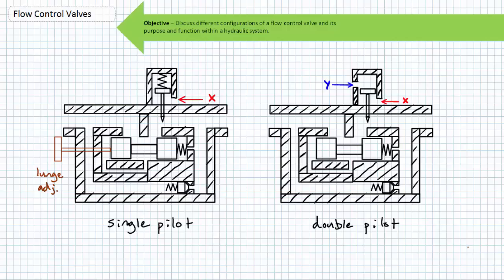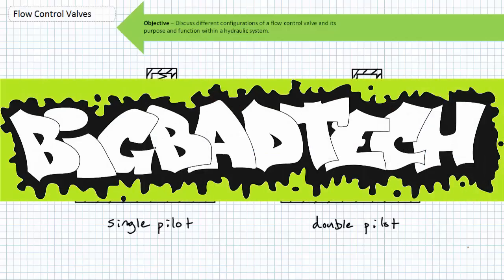In conclusion, this lecture presented different configurations of the flow control valve and its purpose and function within a hydraulic system. We examined non-pressure compensated flow control valves, pressure-compensated flow control valves, and pressure and temperature-compensated flow control valves, and discussed their internal construction, function, and schematic symbols. We learned that the orientation of a check valve is a key feature in determining the direction of free unrestricted flow versus metered or controlled flow. Remember to review these concepts, and thank you very much for your attention. Tell your lab partner about this resource and check out the Big Bad Tech channel for additional resources and updates.